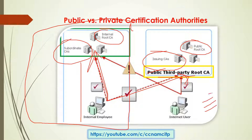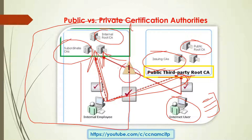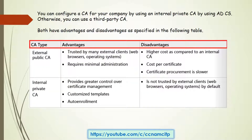The third-party or public certificate authority is third-party software or a third-party vendor who provides that kind of certificate. The internal private user can use both, but an internet user on the public environment cannot use the private certificate authority — he will be restricted. That is the key difference between public and private certificate authority.